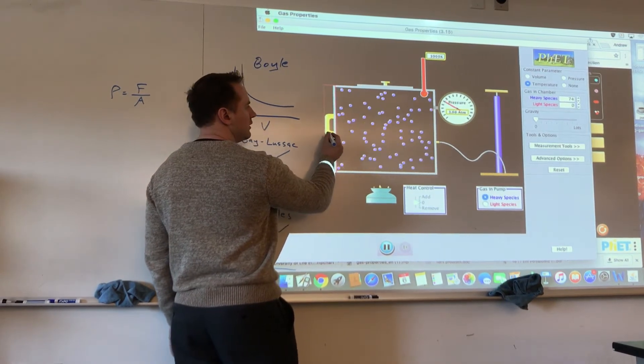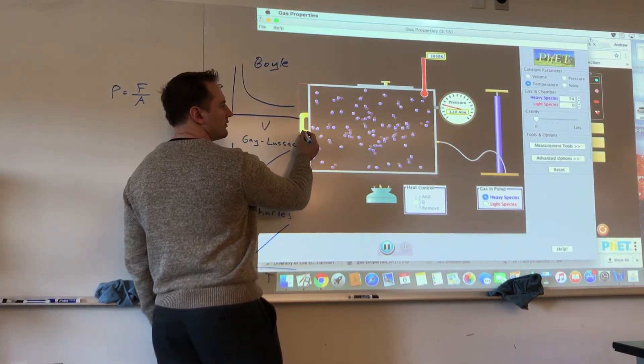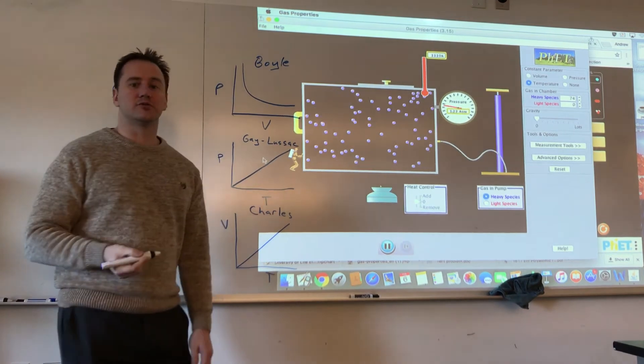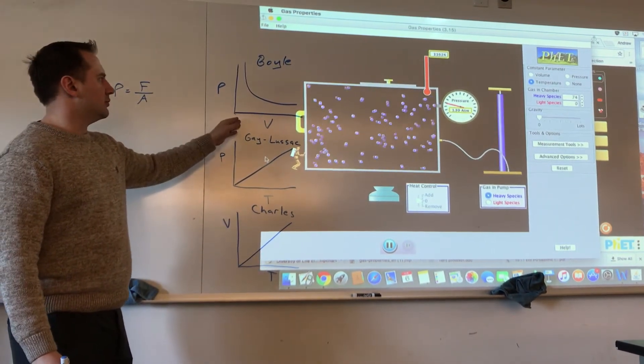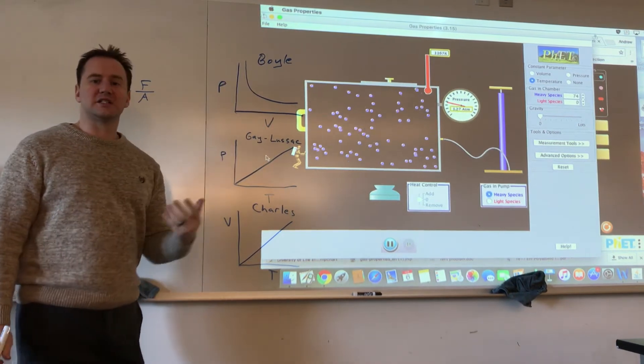So if I expand it, the collisions happen with the walls less frequently and you notice that the pressure drops. So this shows an inverse relationship between pressure and volume and this is what the graph would look like. That's Boyle's Law.